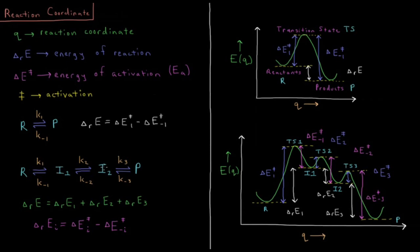I1 goes to intermediate 2 with rate constant K2, and I2 goes to form the product with K3. Each of these can occur in the forward or reverse direction, with rate constants K1, K-1, K2, K-2, K3, and K-3.